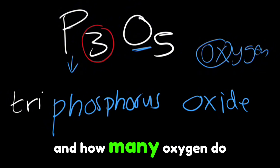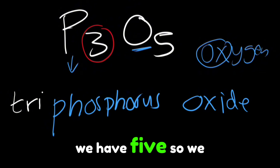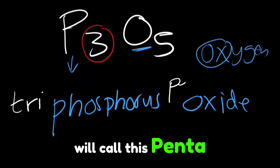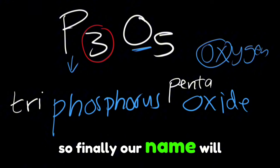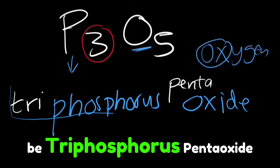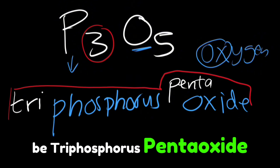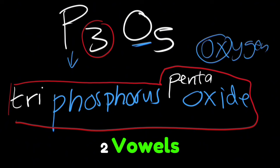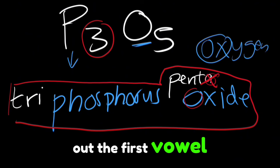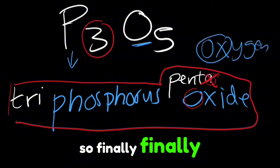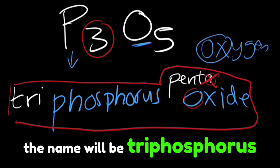How many oxygen do we have? We have five, so we call this penta, because penta stands for five. Finally, our name will be triphosphorus pentaoxide. But because we have two vowels, a and o, we cancel out the first vowel. So finally, the name is triphosphorus pentoxide.